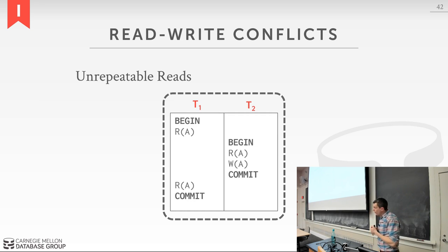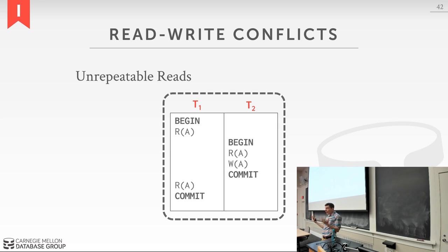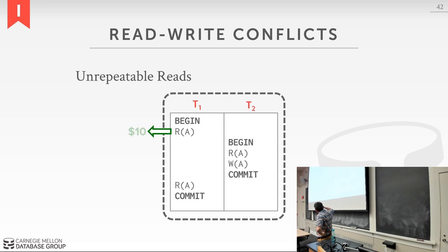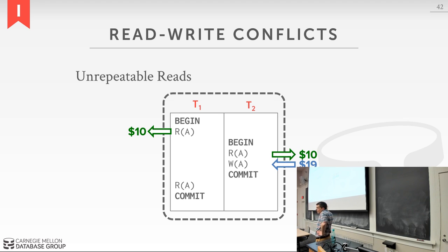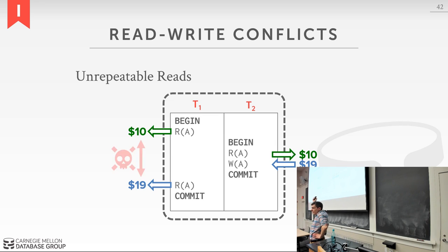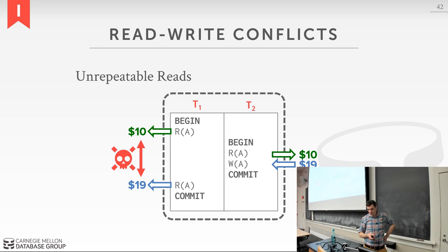A read-write conflict is called an unrepeatable read: T1 reads A, gets $10; context switch to T2, which reads A then writes $19; T2 commits; context switch back to T1, which reads A again and gets $19 — different from before. This should not happen if the transaction were truly executing in isolation. This is easy to understand for a single object but gets hard for ranges.